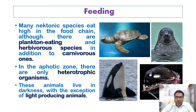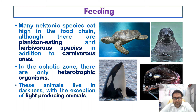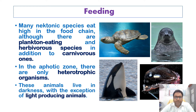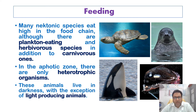Many nektonic species feed high in the food chain — they are at higher trophic levels — although there are plankton-eating species such as fish, herbivorous species such as sea turtles, and carnivorous ones such as seals and killer whales. Their feeding depends on the zone they live in.